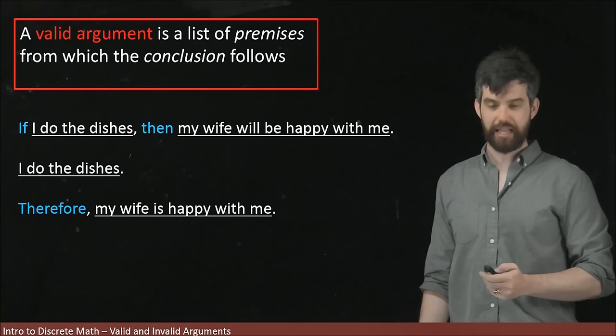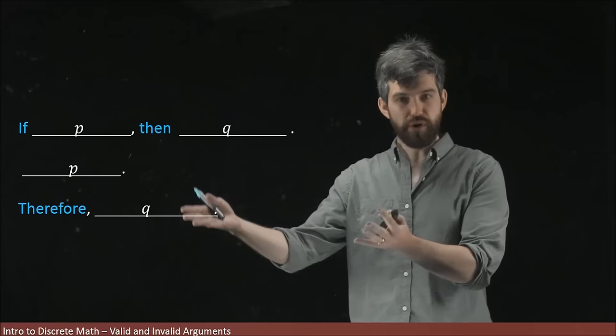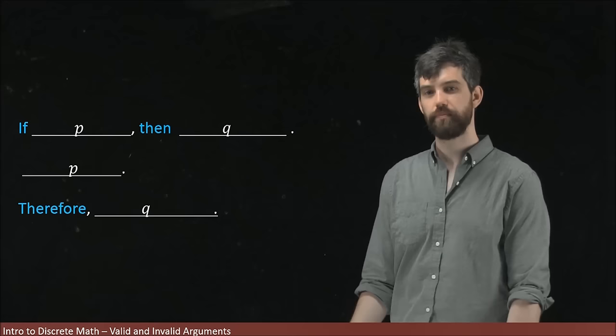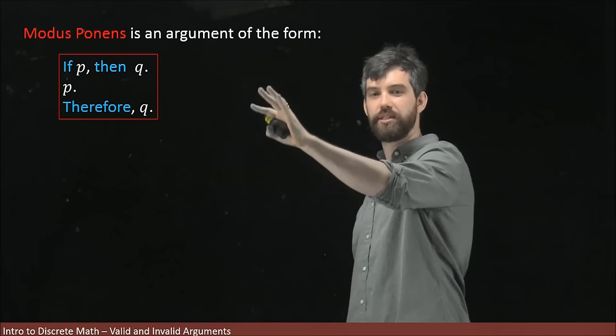So let's just look at the structure for itself for a moment. Now, I filled it in with a kind of joke example here. But I could fill in this structure with anything. For example, I could just put P's and Q's in place of these statements. So where I had I do the dishes in both of these two places, I'm going to put it to a P. And when I have, my wife will be happy with me, I'm going to replace those with Q's.